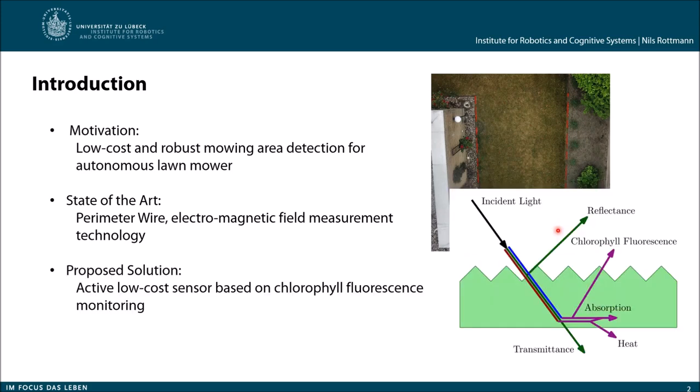What we propose now is an active low-cost sensor approach which uses chlorophyll fluorescence from the lawn. The idea is to send some light to the grass, which then re-emits part of it as chlorophyll fluorescence, which can then be measured. How this is done exactly I will discuss now in the next sections.